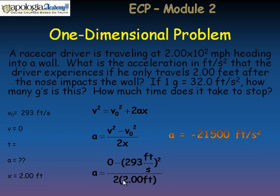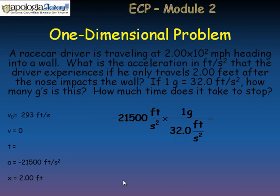Well, it is asking how many g's is this. 32 feet per second squared is 1g. So you can use that as a conversion factor. So negative 21,500 feet per second squared divided by 32. In that particular crash, there's 672 g's, which is an enormous amount.